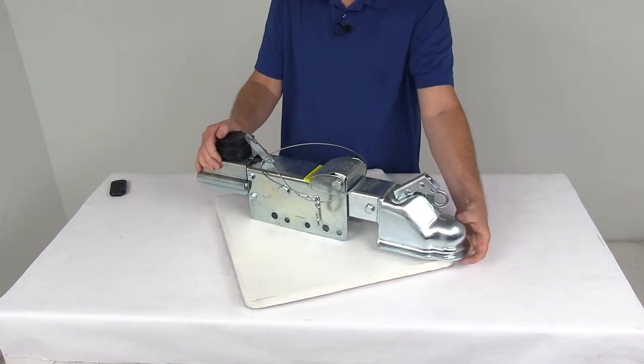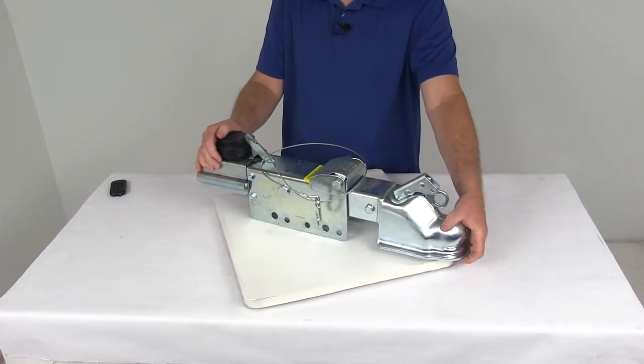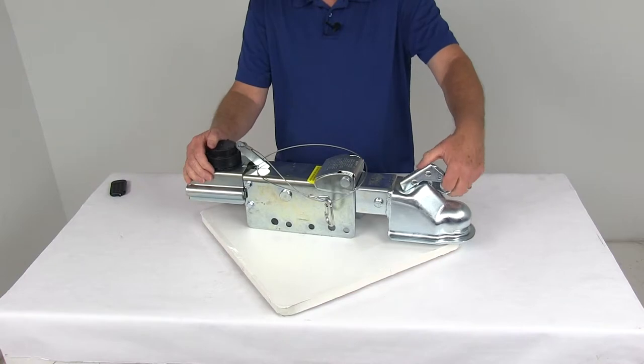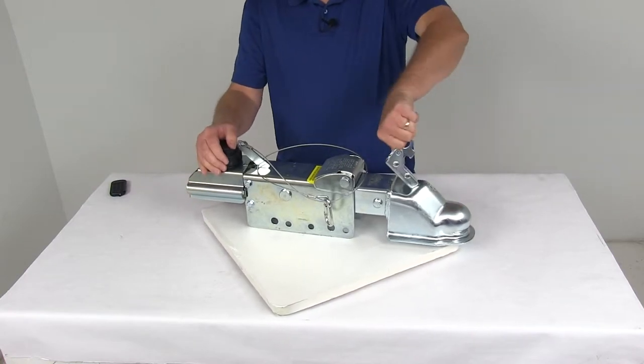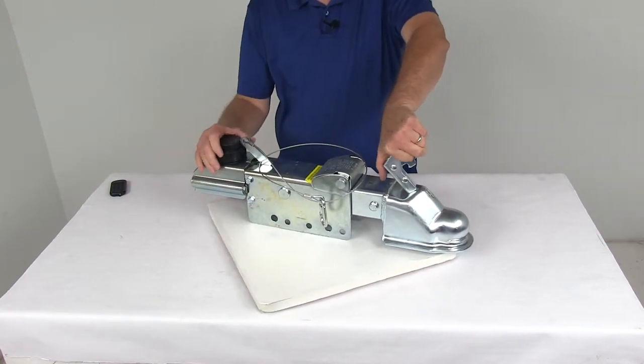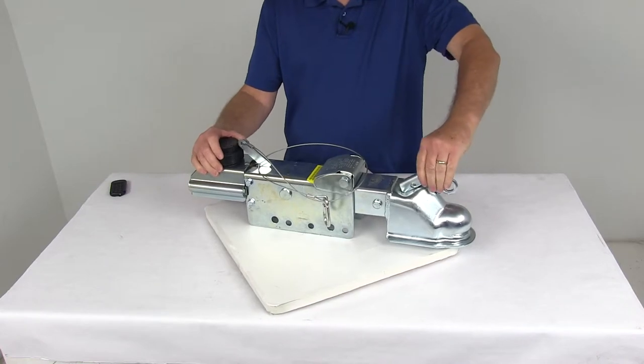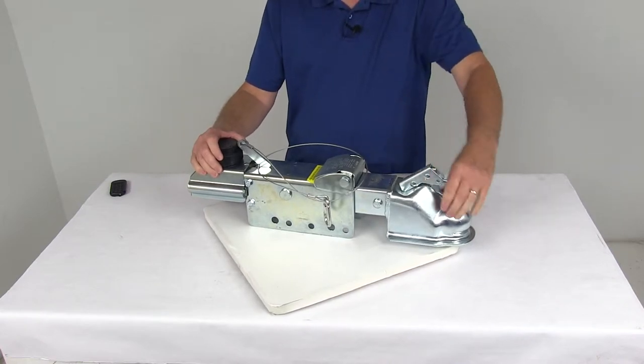The coupler right up front here is a standard heavy-duty coupler designed to fit a two and five sixteenths hitch ball. Basically if you just pull open just like that, that'll drop onto the hitch ball once it's on there. Just rotate that back down and you can see that that will lock it into place.